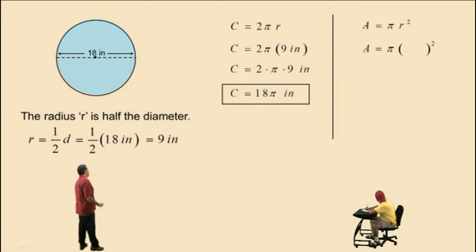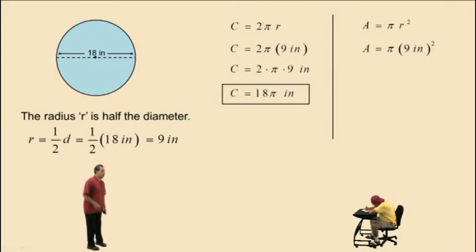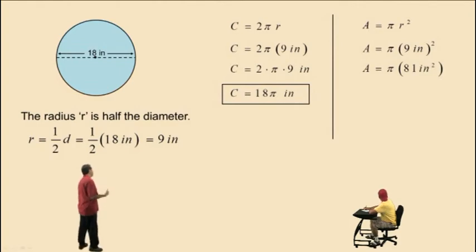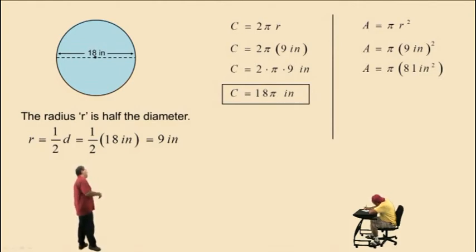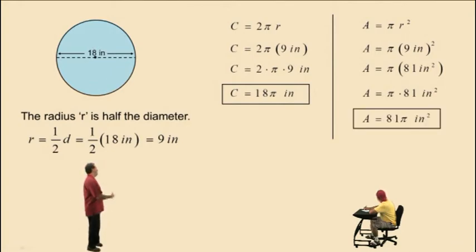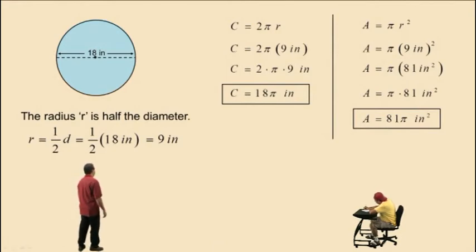Let's replace r with 9 inches. Notice we have 9 inches squared, which means 9 inches times 9 inches. 9 times 9 is 81, and inches times inches is inches squared. So we get pi times 81 inches squared, which is 81 pi — do not forget your dimensions of inches squared. Our final answer is 81 pi inches squared.